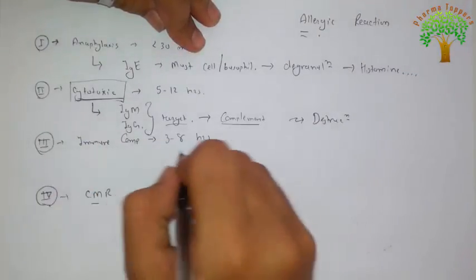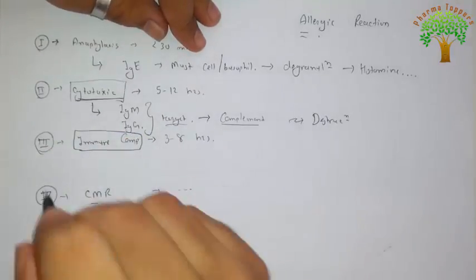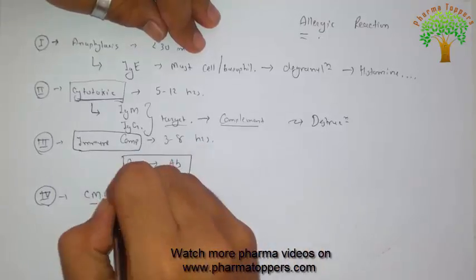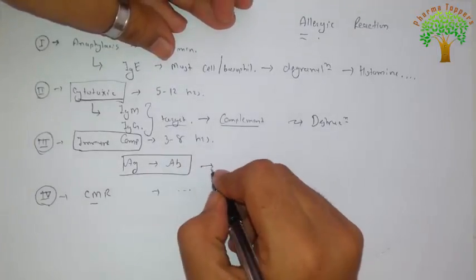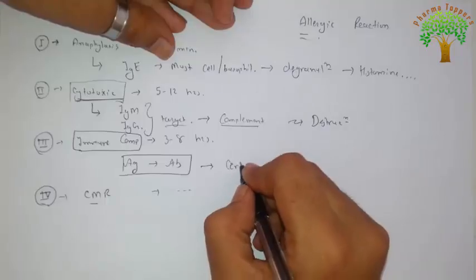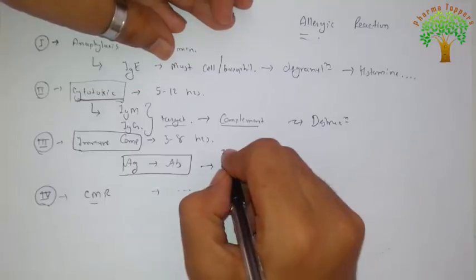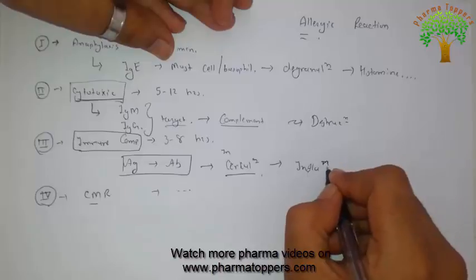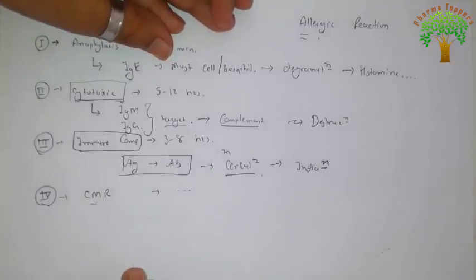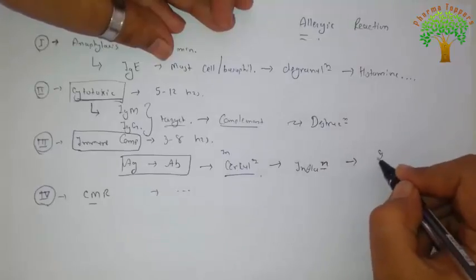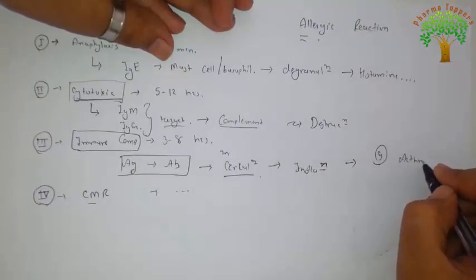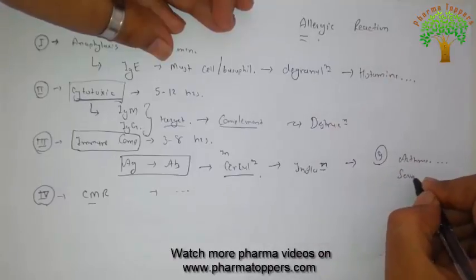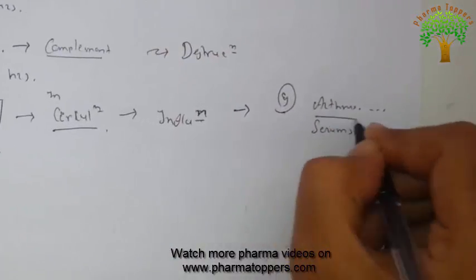Next is the immune complex type. In this case, antigens and antibodies form a complex. This antigen-antibody complex enters the blood circulation, and once in circulation, it shows various responses like inflammation. This is termed the immune complex or type 3 allergic reaction. Examples important from an exam point of view are the Arthus reaction and serum sickness, both of which are type 3 allergic reactions.